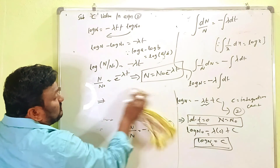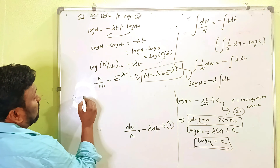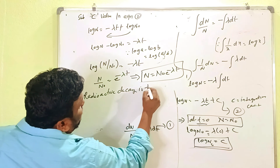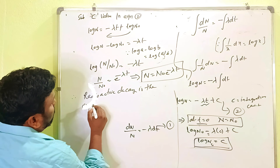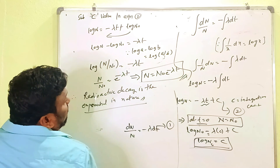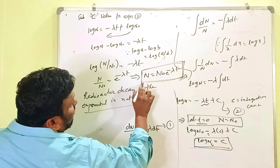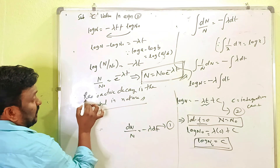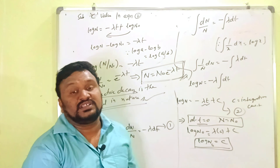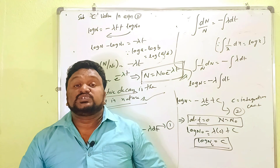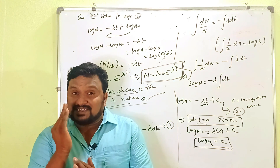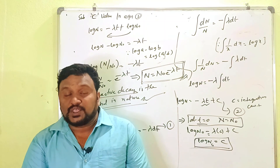Therefore, from the equation N = N₀ e^(−λt), radioactive decay is exponential in nature. This is the complete eight-mark answer. Dear friends, if you understood this, please like, share, and comment on the video. If you want to support me, subscribe to my channel and share it with your friends. Thank you for watching.